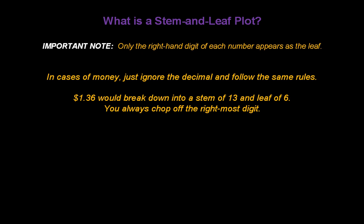In cases of money, just ignore the decimal and follow the exact same rules. $1.36 would break down into a stem of 13 and a leaf of 6.